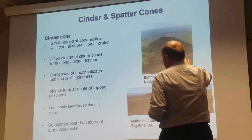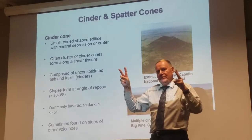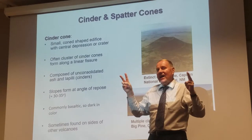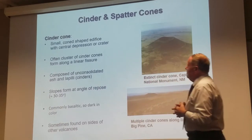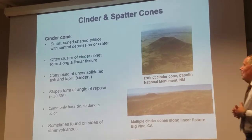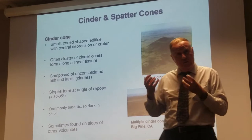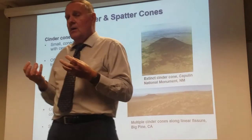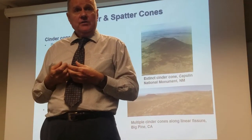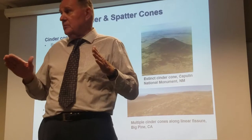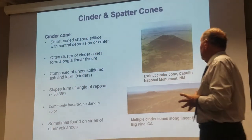Here's what it is — all this is just loose material. The difference, and again sometimes it's the eye of the beholder, is that in a spatter cone, quite often the material is still molten when it hits the ground, so you get a little bit more welding. Sometimes you can build something that's a little bit steeper than the angle of repose.